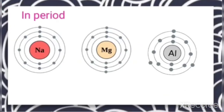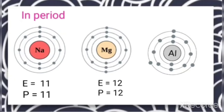Now let us talk about the variation of atomic radius in a period. Taking examples of elements in a period — sodium, magnesium, and aluminium — these are elements of the third period. When you compare their atomic structures, the number of electrons is increasing. For sodium, the number of electrons and protons is 11. Since from left to right the atomic number is increasing, the number of electrons and protons also increases. For magnesium, electrons and protons equal 12.